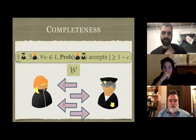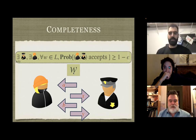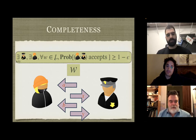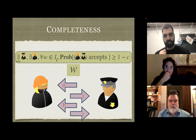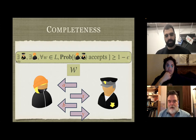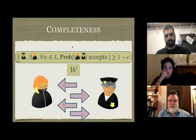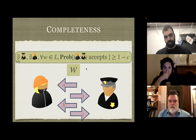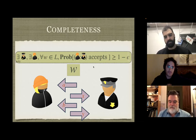To have an interactive proof we need two properties. The first is called completeness. Completeness means there exists a verifier and a prover such that whenever W is in L — whenever W is part of the language — a conversation between the prover and the verifier leads the verifier to accepting with probability nearly one. Many of the proofs we describe will have an acceptance probability of exactly one, in which case we say it's perfect completeness.